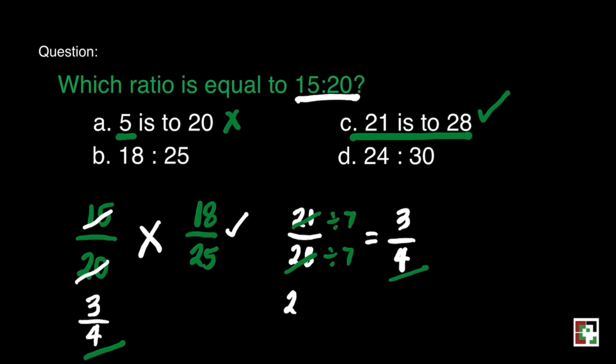How about letter D? 24 is to 30. We can divide these two numbers by 6 to get the lowest term. 24 divided by 6 is equal to 4, and 30 divided by 6 is equal to 5. That makes it 4 fifths. And 4 fifths is not equivalent to 3 fourths. It means letter D is not an answer to our question. And that means letter C is our final answer, 21 is to 28.